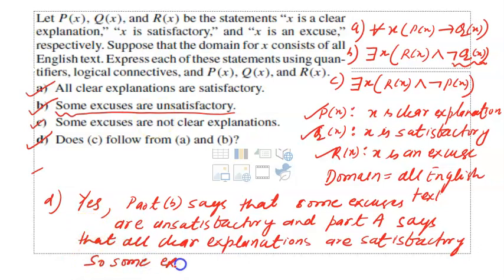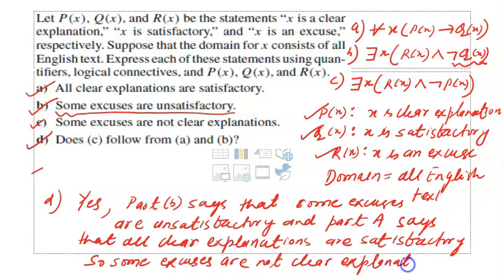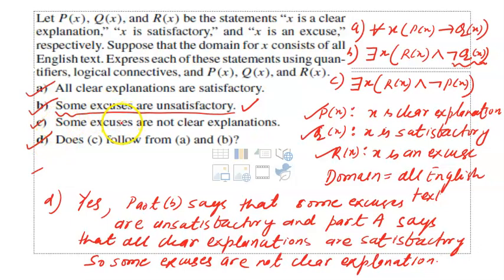So we can conclude that some excuses are not clear explanations. Part B guarantees there are some excuses which are unsatisfactory. Along with part A — if it is an unsatisfactory explanation, and all clear explanations are satisfactory — some excuses are not necessarily clear explanations. This is how you solve this kind of problem. I am going to take one more problem and then consider this topic complete.